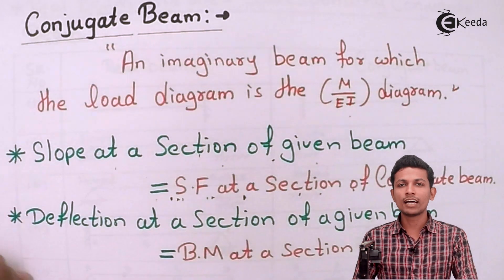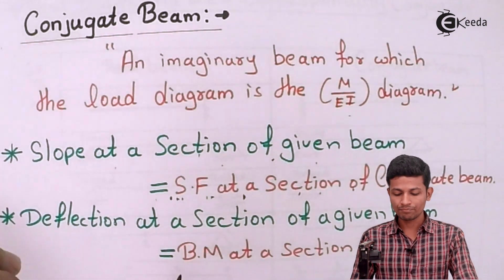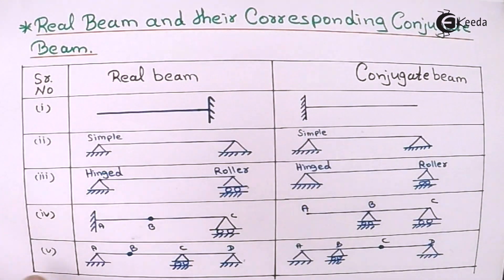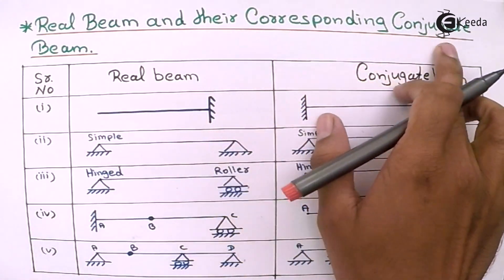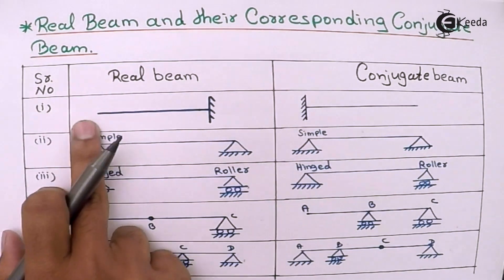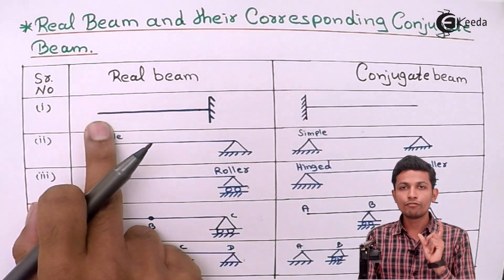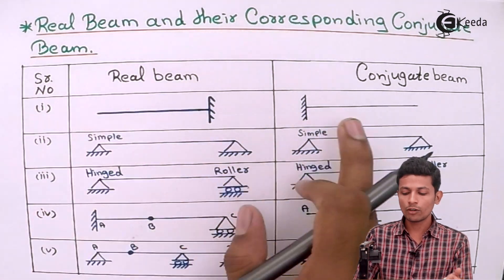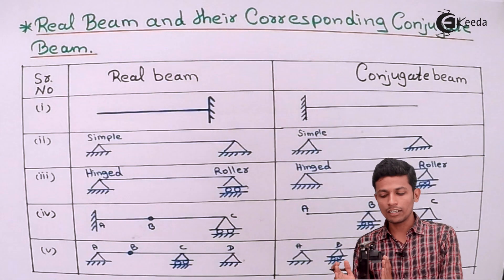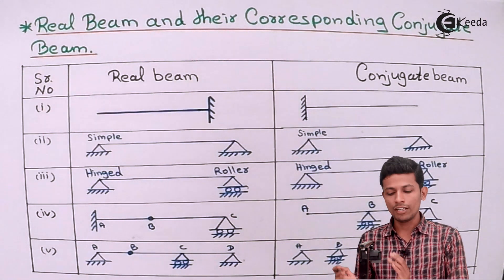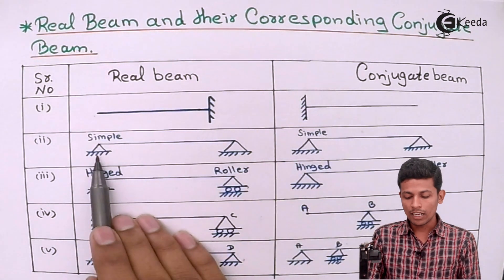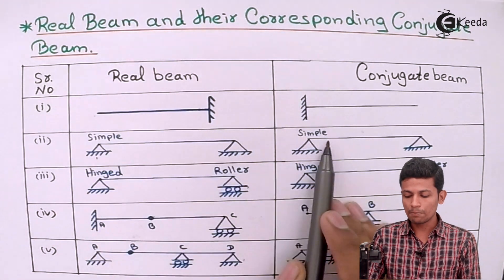Now see the real beams and their corresponding conjugate beams. If the first part of a real beam is free, then the conjugate beam will be fixed. If the real beam is fixed, the conjugate beam will be free. For simple supports, the support condition remains unchanged — simple supports stay the same in both real and conjugate beams.